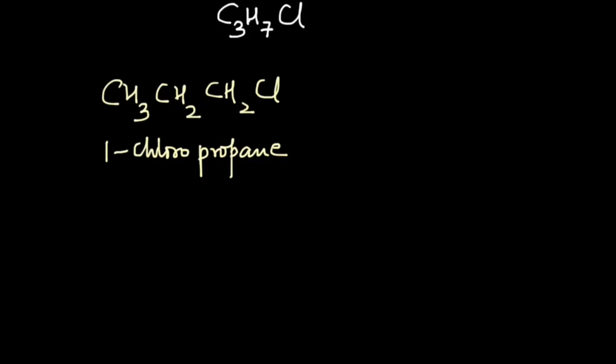Now I will teach you how to write these structures so don't panic if you are not getting it 100% right now. If I connect this chlorine to the middle carbon atom you will get a different structure, CH3-CH(Cl)-CH3. This compound is called 2-chloropropane.